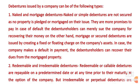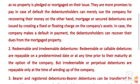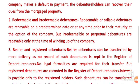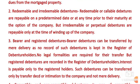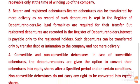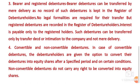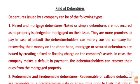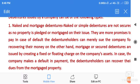So these are the kinds of debentures. Hope you all understood: first, naked and mortgage debentures; second, redeemable and irredeemable debentures; third, bearer and registered debentures; fourth, convertible and non-convertible debentures. Hope you all understood about the types of debentures. Thank you, have a nice day.